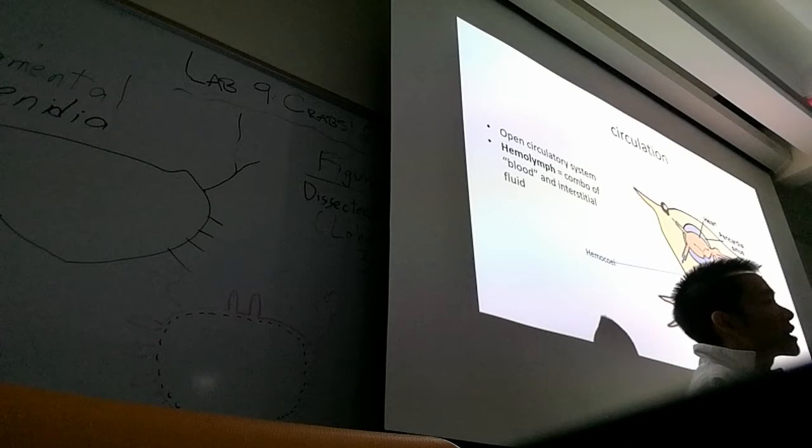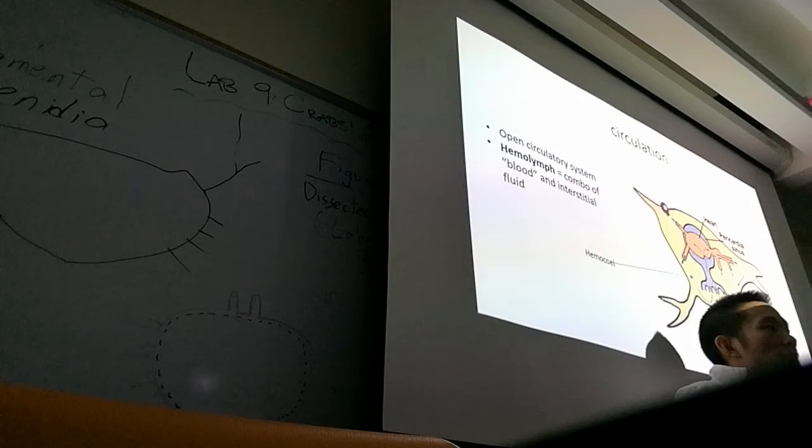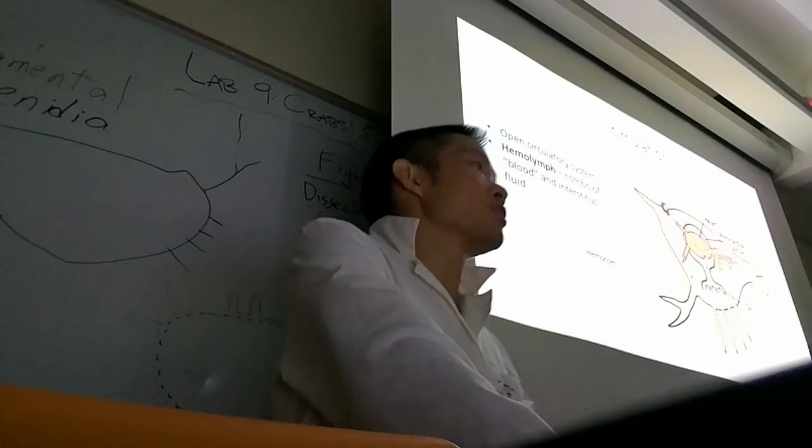Crabs have a hemocoel, which is an open body cavity. They've got their organs, and their blood will directly open out into this hemocoel so that all of their organs get directly bathed in blood. It's different from animals with a closed circulatory system like us, because all of our blood strictly stays in our vessels.